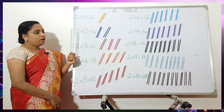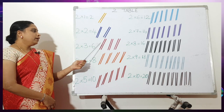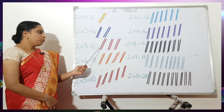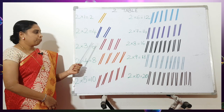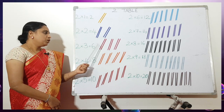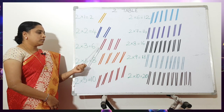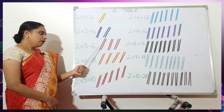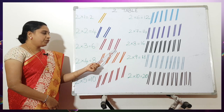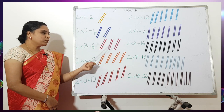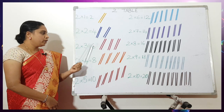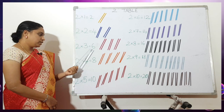Then the next one: 3 times 2 is 6. So children, counting — 1, 2, 3 — that is 3 times 2. 3 times 2 is 6.